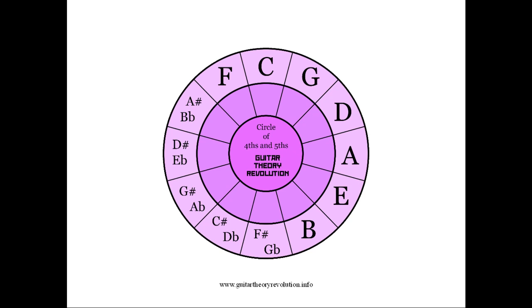First we need to memorize this information — we have to have a mental image of the circle of fourths and fifths in our mind. Because when we're playing music, when we're playing the guitar, we don't want to have our mental focus on trying to remember this information; we want to be focused on playing music. So if we have this memorized, it will free up our mental energy.